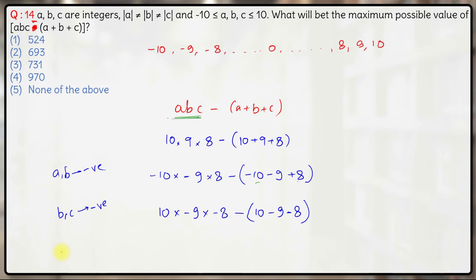Or even if you take A and C negative, that will give us minus of minus 10 plus 9 minus 8. So of all these three, minus 10 minus 9 plus 8 is smallest. So it will be better if we take A and B negative, that means 10 negative and 9 negative over here.